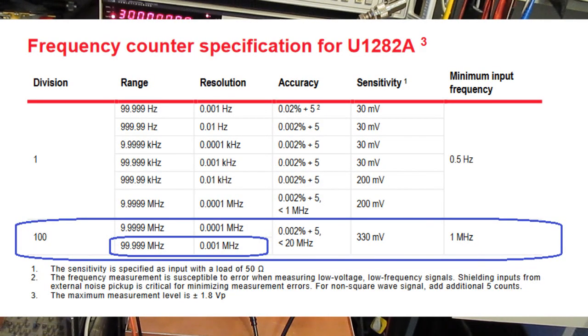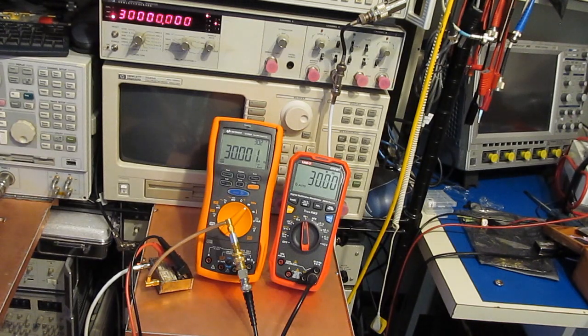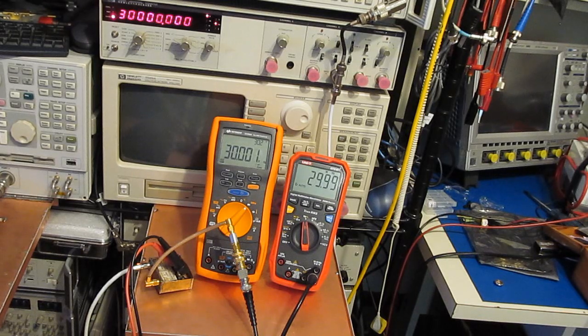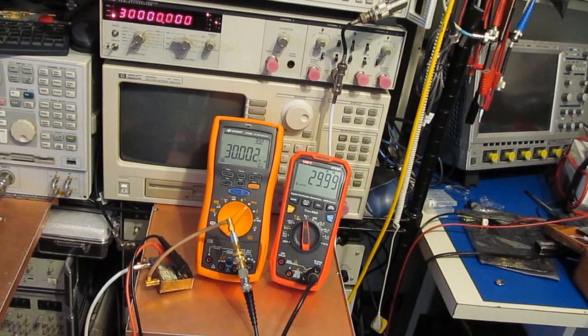So here we can see the specifications for the frequency counter. Notice that they call it a range of essentially 100 megahertz. But if we look to the right column under accuracy, they only specify it below 20 megahertz. So you could say the meter's just infinitely inaccurate as you get above 20 megahertz. So the fact that the meter shows 70 megahertz when you're applying 30, I guess it's valid according to their spec.